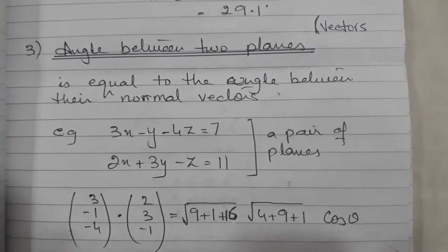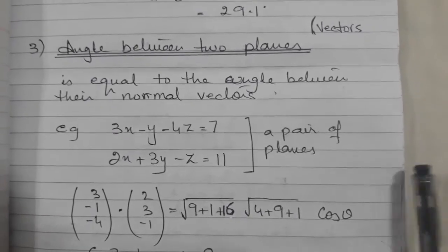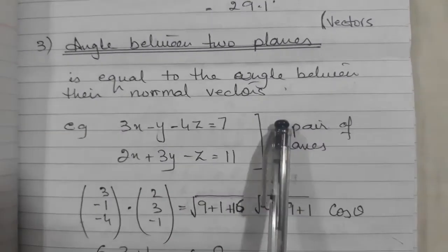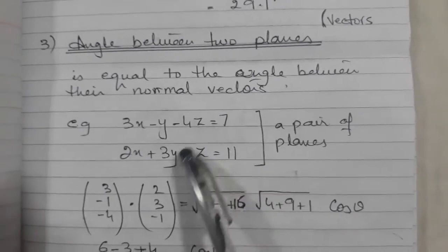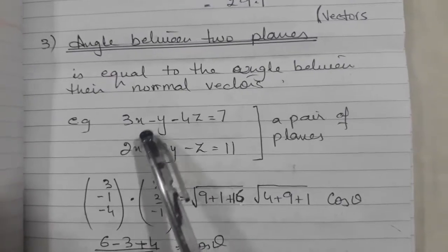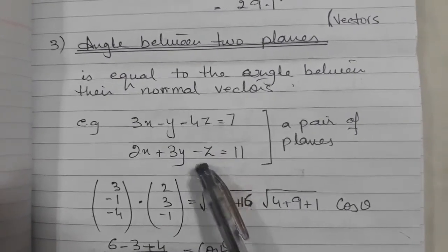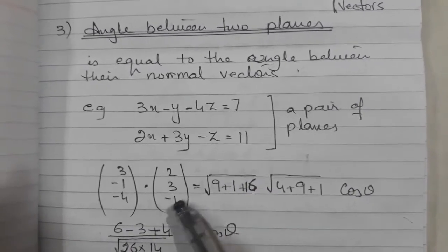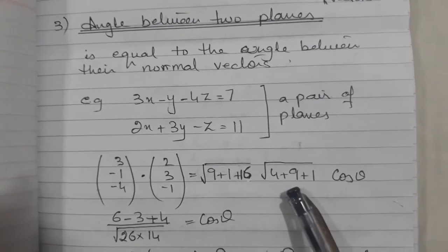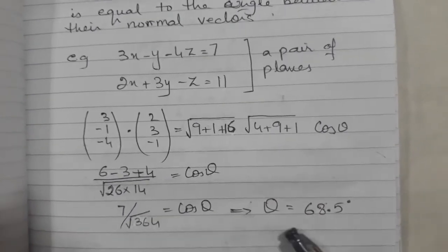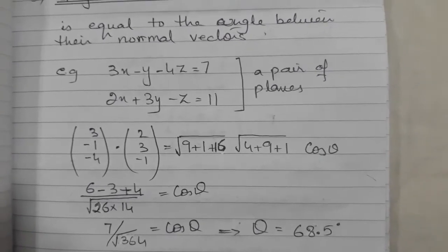The angle between two planes: when you have to find the angle between two planes, you actually find the angle between their normals. If two planes are given, you know their normals - (3, -1, 4) and (2, 3, -1) are the normal vectors. If you apply the dot product or scalar product, you will see that the angle is 68.5 degrees. This is how you find the angle between two given planes.